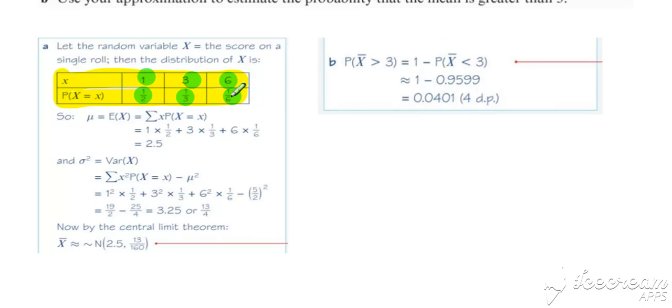Now in order to work out the distribution for x bar, we're going to need the expected value of x, which we work out in the usual way to be 2.5, and we're going to need to work out the variance of x, which we can work out in the usual way, and that gives us 3.25 or 13 over 4.